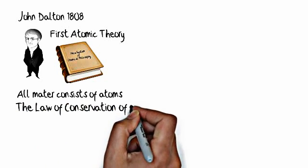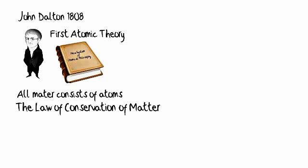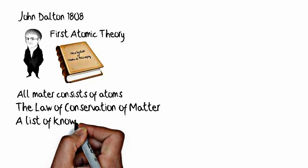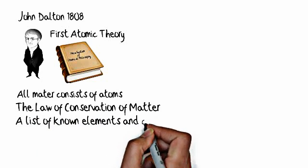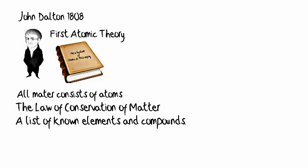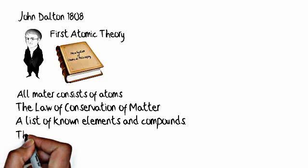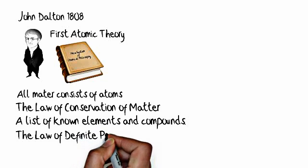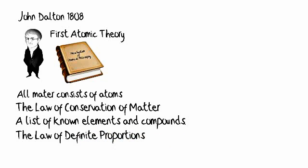Second that atoms cannot be created nor destroyed which is the law of conservation of matter. Third he provided a list of known elements and compounds - different atoms of different substances are different and he actually provided a series of pictures. Fourth he gave us the law of definite proportions which states that any substance has the same ratio of atoms. For instance if you have water every water molecule will have two hydrogens one oxygen.